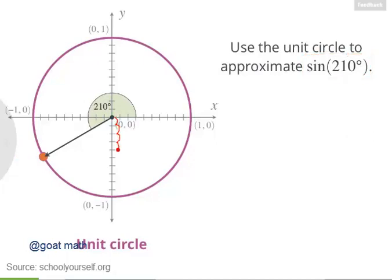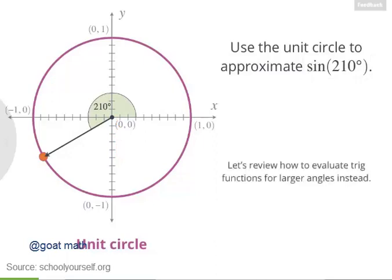Remember, these tick marks are each separated by a distance of 0.1. And to review how to evaluate trig functions of angles like 210 degrees, click over here instead. The sine of 210 degrees is the y-coordinate of this point. It looks like this point has a y-coordinate of 0.5, and it's below the x-axis. So the sine of 210 degrees is approximately negative 0.5.